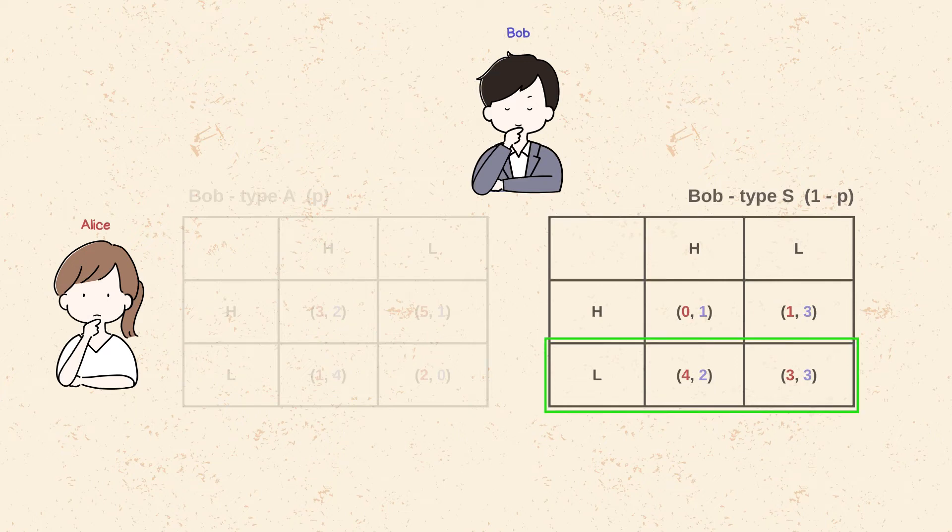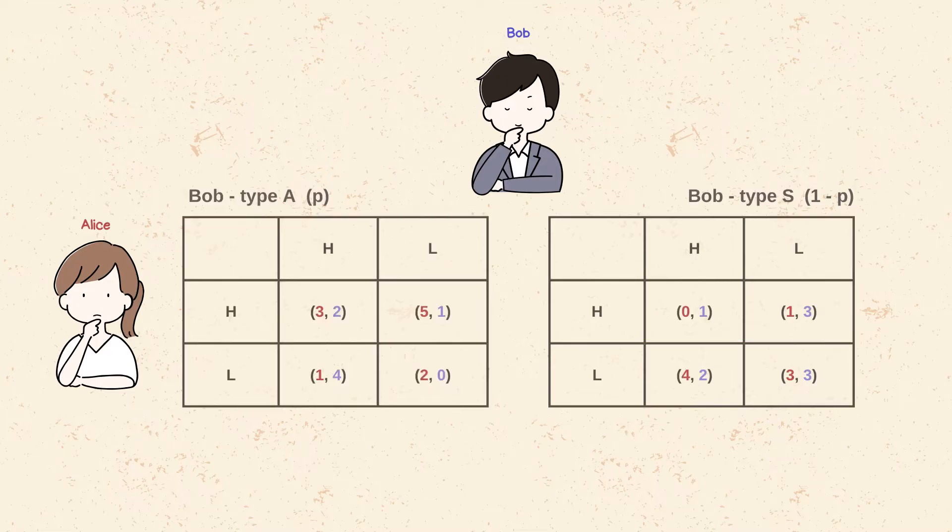However, in reality, Alice does not know whether Bob is of type A, avoiding risk, or S, risk-seeking. She can only go with what she believes his type might be.